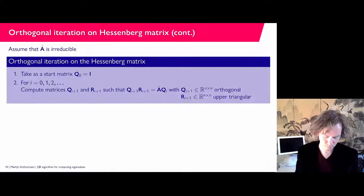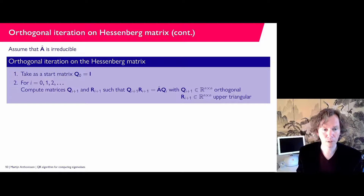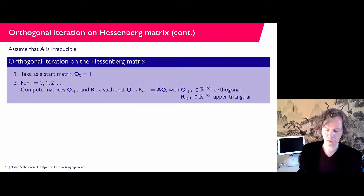The main idea is to perform orthogonal iteration on the Hessenberg matrix. We start with Q₀ equal to the identity matrix. Then in each step we compute Â·Qᵢ, find its QR decomposition Qᵢ₊₁·Rᵢ₊₁, and continue with Qᵢ₊₁. This is not the final form of the QR algorithm yet, but it is the basic idea. In every step we need a QR decomposition, which is cheap because Â has upper Hessenberg form.